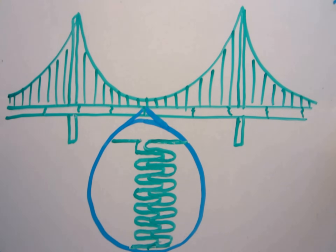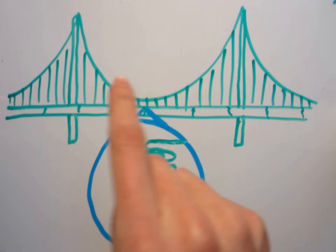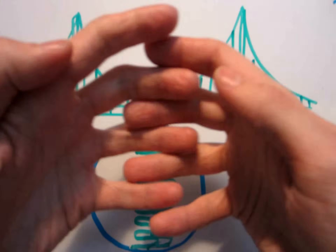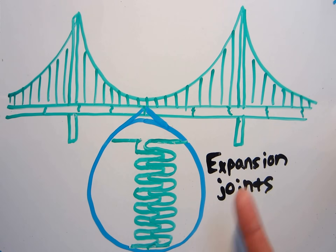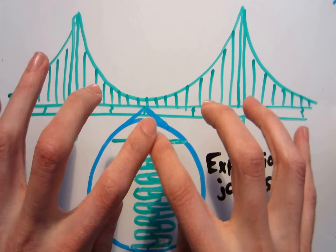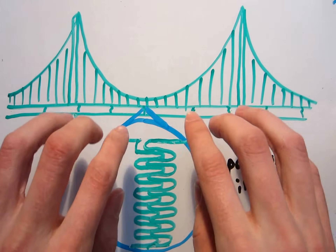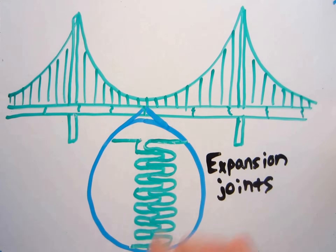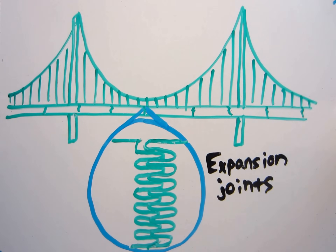You might have noticed driving over these sorts of finger gaps that are built into bridges. They're called expansion joints, and they allow the bridge to vary in length a little bit without buckling when the temperature changes.